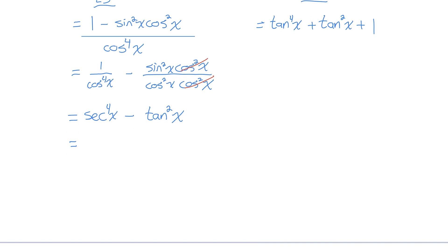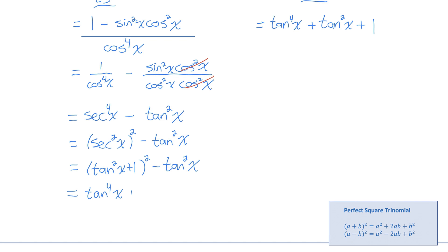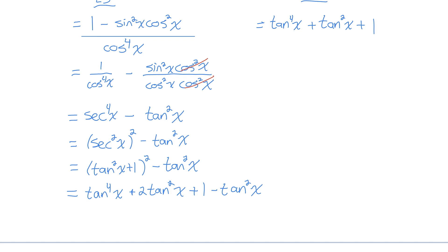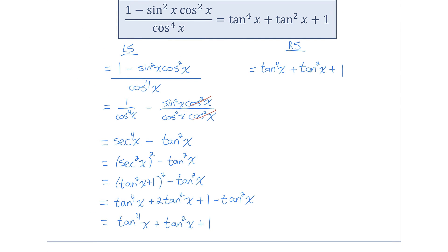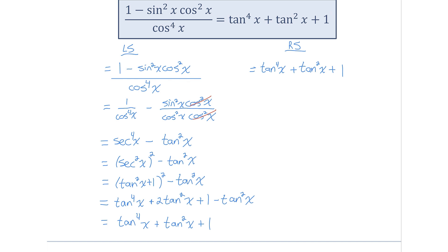I'll rewrite 1 over cos to the power of 4 of x as secant to the power of 4 of x, based on the reciprocal identity. I can think of secant to the power of 4 as secant squared x being squared. And secant squared x equals tan squared x plus 1. When I expand that binomial being squared, (tan squared x plus 1)² equals tan to the power of 4x plus 2 tan squared x plus 1. Collecting like terms, I have 2 tan squared x minus tan squared x, which is 1 tan squared x. That's exactly equal to what's on the right side — this equation is an identity, it's been proven.